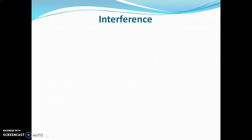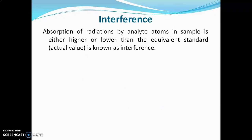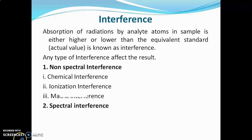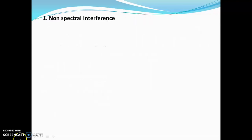Now we will discuss interference. Interference refers to when the absorption of radiations by the analyte atom in the sample is either higher or lower than the equivalent standard or actual value. Any type of interference will affect the result. There are two types: non-spectral interference and spectral interference. Non-spectral interference includes chemical interference, ionization interference, and matrix interference.